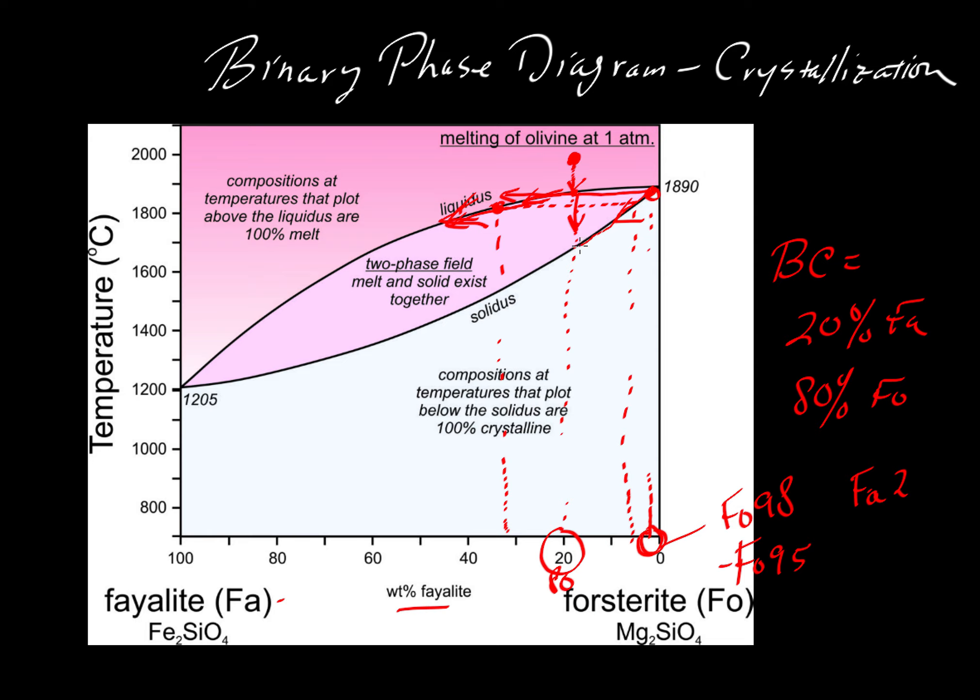The crystals will evolve, the entire system will evolve, until the crystals finally hit this point here. When the crystals equal the bulk composition we started with, once the crystals reach 20% fayalite, then that means we will have run out of liquid. What's the last little bit of liquid?